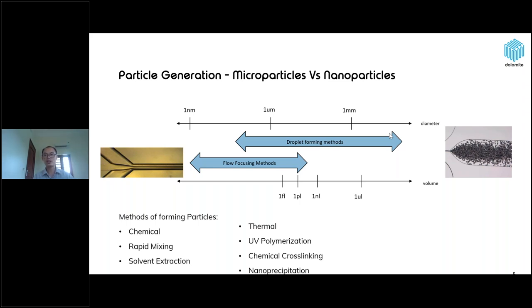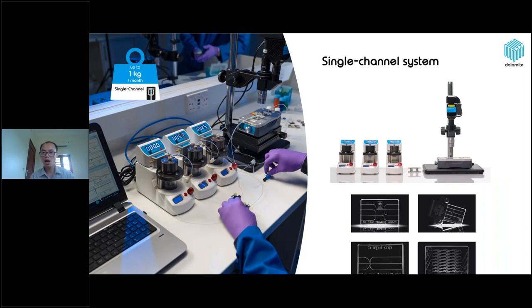Specifically for PLGA particle generation, we use solvent extraction. This slide shows our single-channel system used in lab-scale R&D research for making PLGA micro and nanoparticles. It includes three pumps connected to a microfluidic chip. The chip is located under a microscope integrated with a high-speed camera so we can easily visualize all processes inside the chip. The system is very flexible and can be applied to many applications depending on the target products.